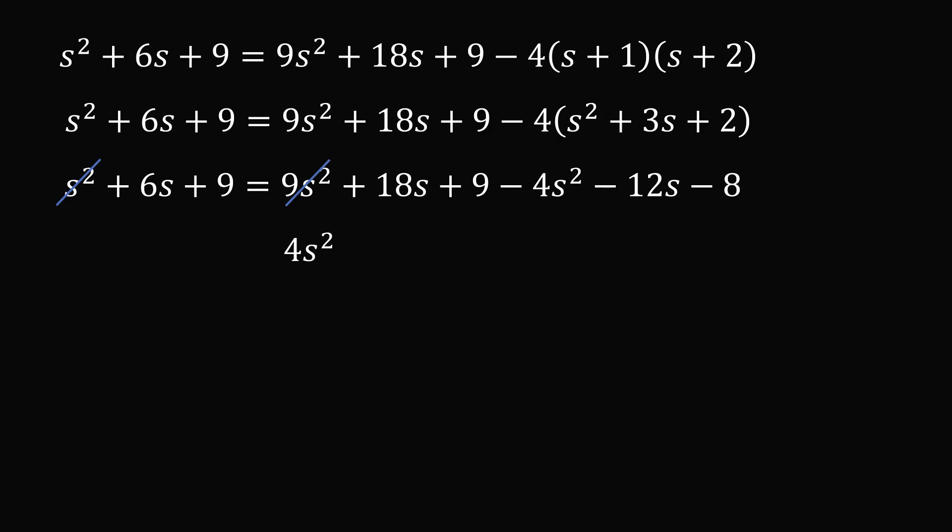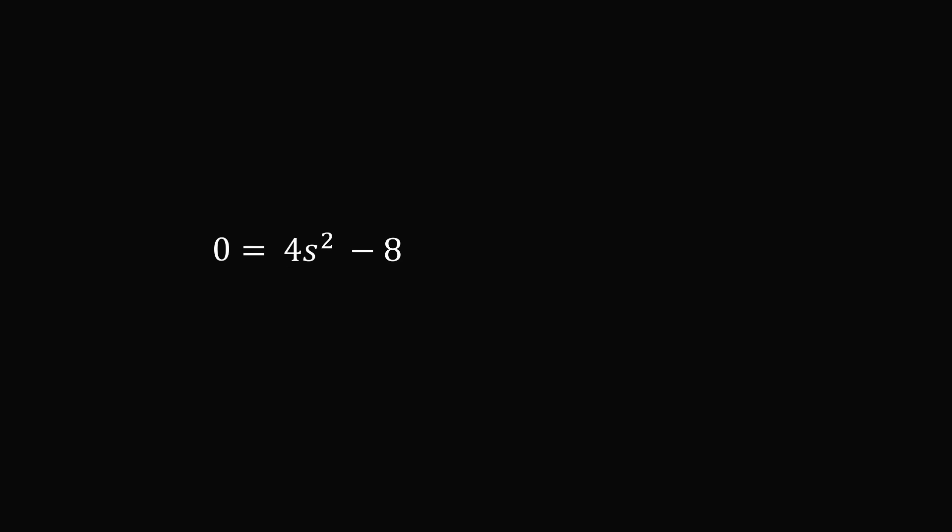Let's just cross out the terms so that we know we've accounted for them. We then have 18S minus 12S, which will be 6S, and then we subtract 6S, so that will all cancel out to be 0S. So we'll just cancel out the S terms. Finally, we have 9 minus 9 minus 8. This will be equal to minus 8. And this is all equal to 0. So we have a tremendously simple equation.